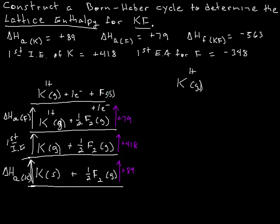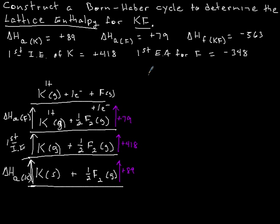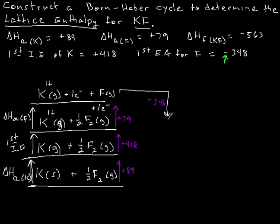Now we need to give that electron to the fluorine, because the potassium is going to give it to the fluorine. That's going to be the electron affinity. The sign of electron affinity — at least the first electron affinity — is negative. So instead of continuing to go up, we go over and then down, because we're losing energy. This is −348 kilojoules per mole, so there is an energy drop there.